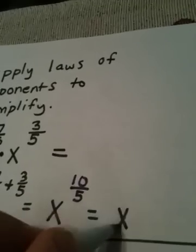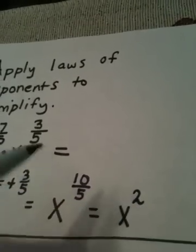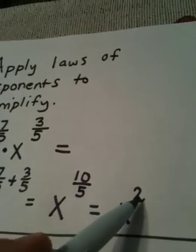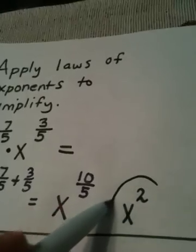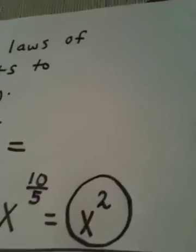7 fifths plus 3 fifths becomes 10 fifths. And of course, 10 fifths is 2. So my exponent is 2. Therefore, my answer is x squared.